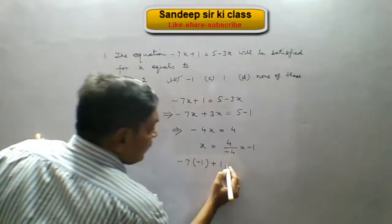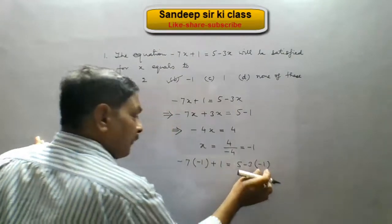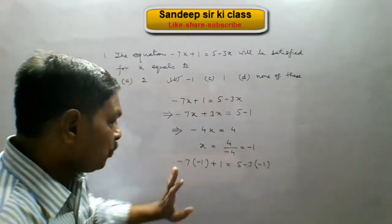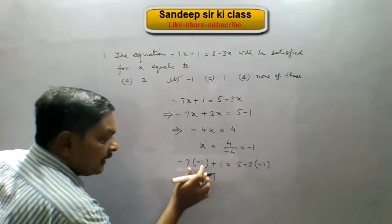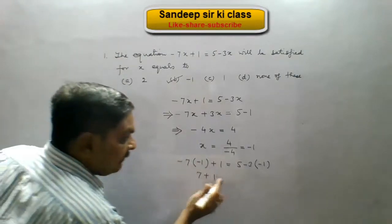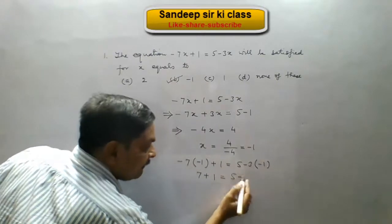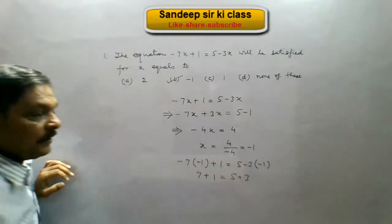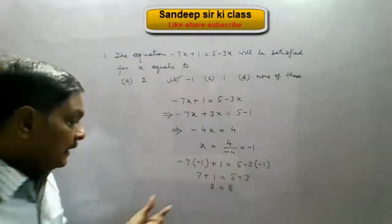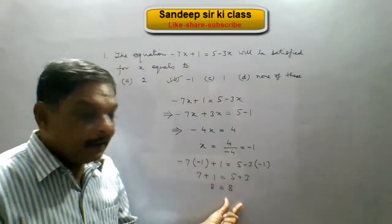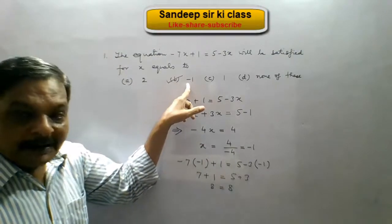On the left hand side we get minus 7 times minus 1 plus 1, which gives us 7 plus 1. On the right hand side we get 5 minus 3 times minus 1. Since minus 3 multiplied by minus 1 is plus 3, right hand side becomes 5 plus 3. So this gives 8 equals 8. Left hand side and right hand side are equal, and hence option B is correct — the value of x is minus 1.